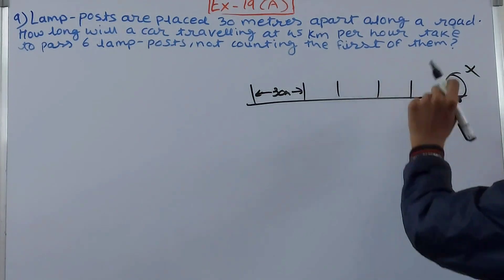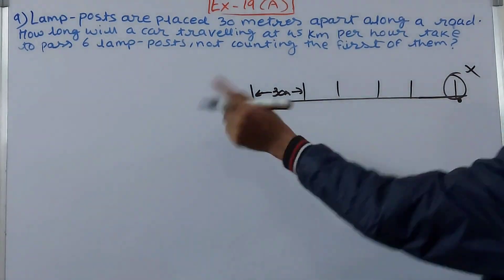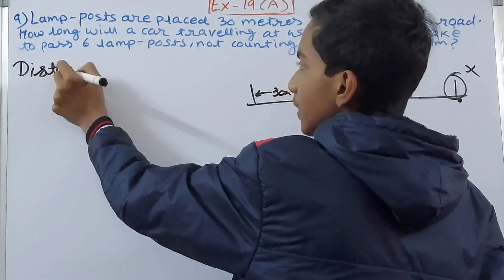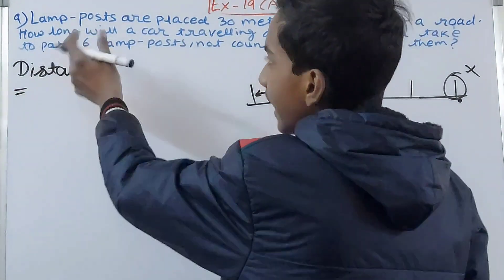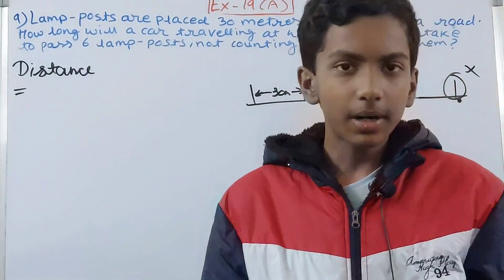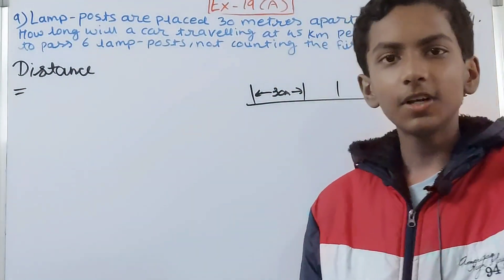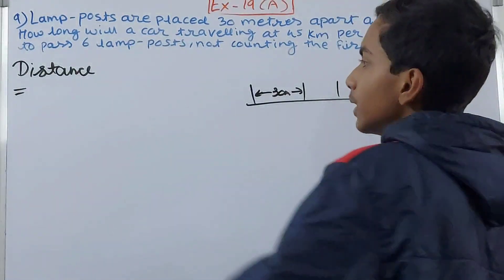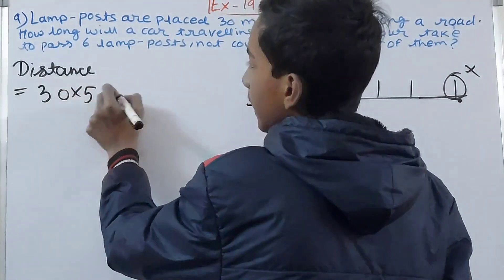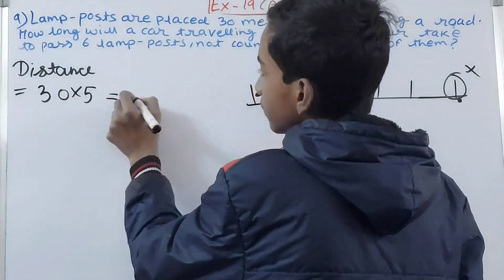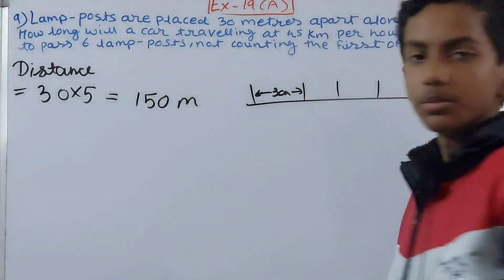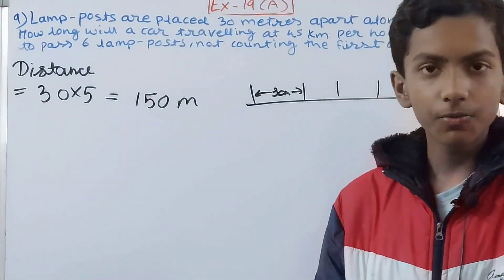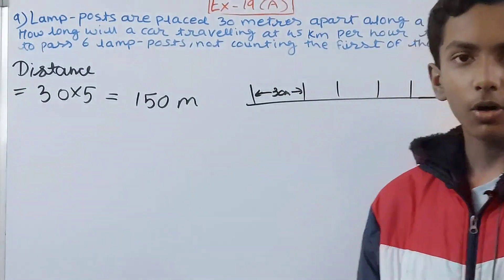Since the first lamp post is not counted, the car travels across 5 gaps. We know each lamp post is placed 30 meters apart, so if we are calculating the distance between five lamp posts we multiply 30 by 5. The distance becomes 30 × 5 = 150 meters. This is our distance — the car needs to cross 150 meters.